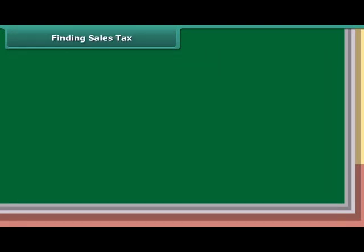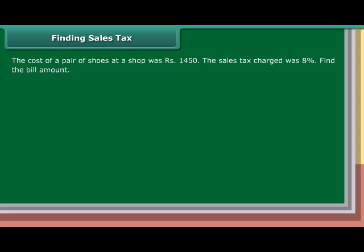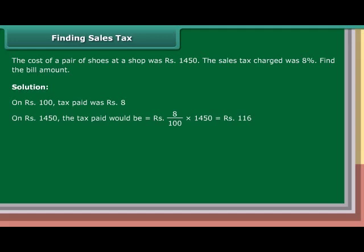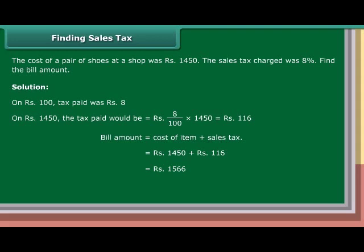Finding sales tax: The cost of a pair of shoes at a shop was Rs. 1,450. The sales tax charged was 8%. Find the bill amount. Solution: On Rs. 100, tax paid was Rs. 8. On Rs. 1,450, the tax paid would be Rs. 8 upon 100 into 1,450, which is equal to Rs. 116. Bill amount is equal to cost of item plus sales tax, which is equal to Rs. 1,450 plus Rs. 116, equal to Rs. 1,566.